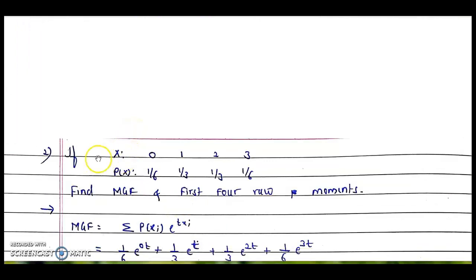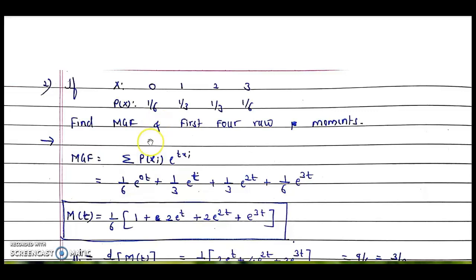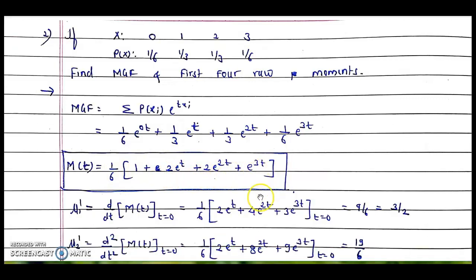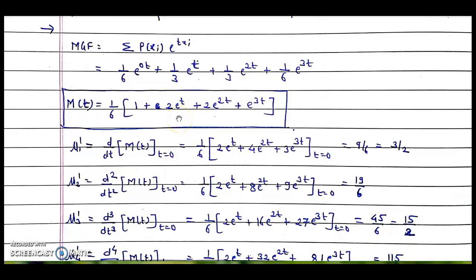The second MGF example uses a discrete random variable with four values of x and corresponding probabilities. For discrete random variables, p is multiplied by e^(tx), so MGF = (1/6)e^(0·t) + (1/3)e^(1·t) + (1/3)e^(2t) + (1/6)e^(3t), which simplifies to (1/6)(1 + 2e^t + 2e^(2t) + e^(3t)). This expression in the box is the moment generating function of the given distribution.